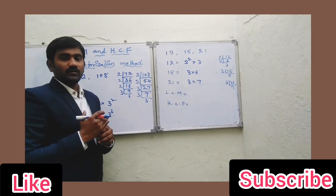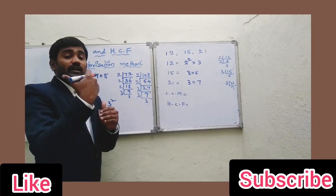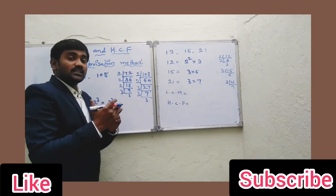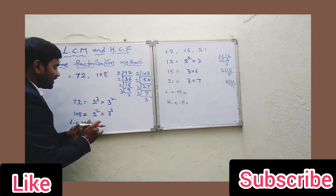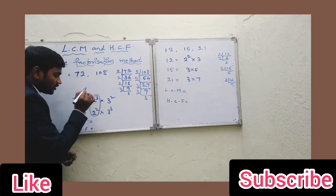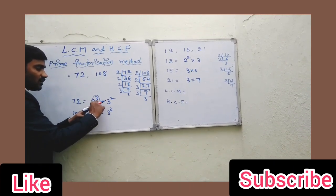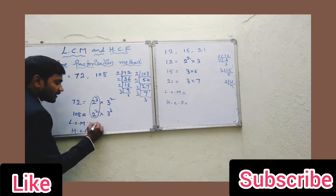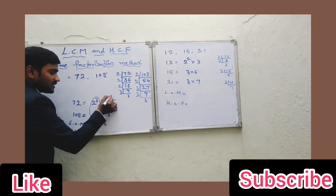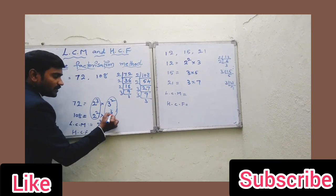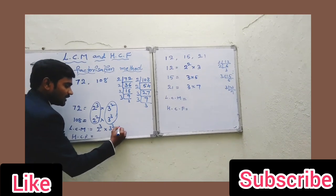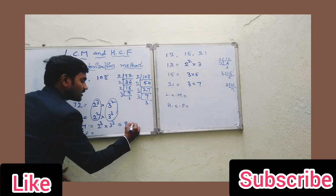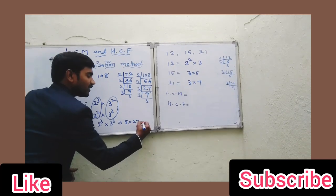The highest power of 2 here is 2³ — that is the highest — and the highest power of 3 is 3³. If you multiply both, 2³ = 8 and 3³ = 27, so LCM = 8 × 27 = 216.